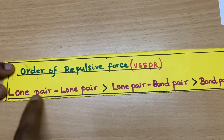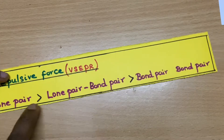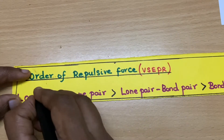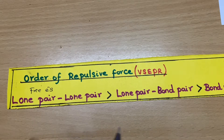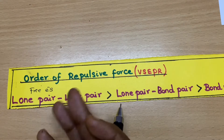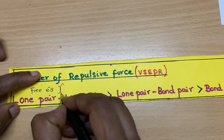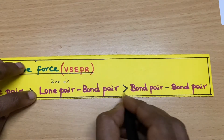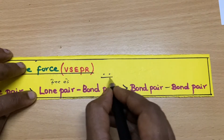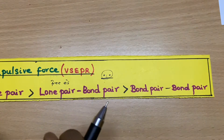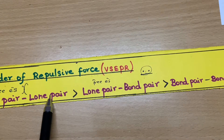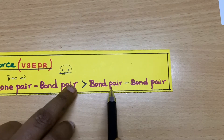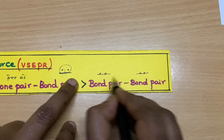What is the order of repulsive force? The lone pair–lone pair repulsion is greater than the lone pair–bond pair repulsion, which in turn is greater than the bond pair–bond pair repulsion. Lone pairs are free electrons not involved in any bonding. Like charges repel each other, so free electrons which are not involved in bonding will produce much repulsive force. Bond electrons that are involved in bonding experience less repulsive force. The repulsive force between free electrons and free electrons is much greater than between free electrons and bond pair electrons, which in turn is greater than between bond pair electrons.